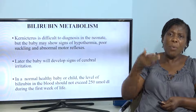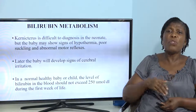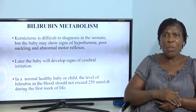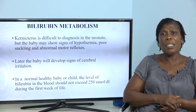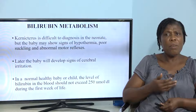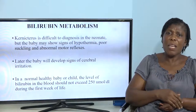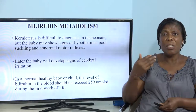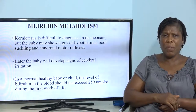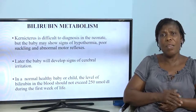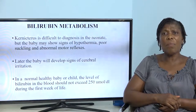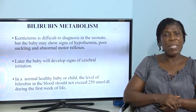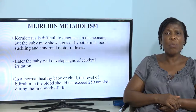The baby will show all forms of mental retardation or neurological disorders. Later the baby will develop signs of cerebral irritation. Even if these babies are able to survive, we can have cerebral palsy, mental retardation, neurological and learning difficulties. In a normal healthy baby or child, the level of bilirubin in the blood should not exceed 250 micromoles per deciliter during the first week of life.